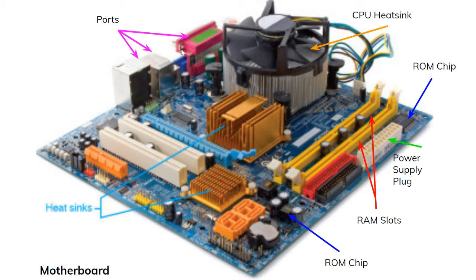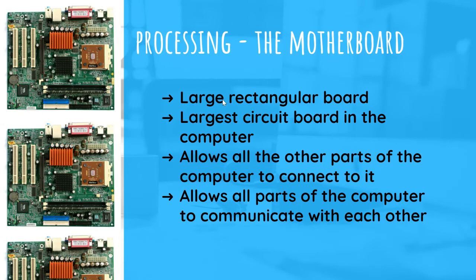We also have the CPU heatsink, and underneath that is the central processing unit. At the back are the different ports: USB, audio headphone and microphone jacks, Ethernet cable, HDMI, and VGA ports. The motherboard is a large rectangular circuit board — sometimes green, blue, or black, but mostly green. It allows all other parts of the computer to connect to it and communicate with each other.